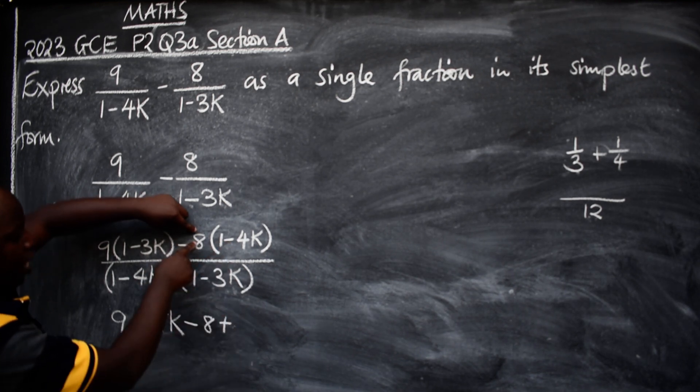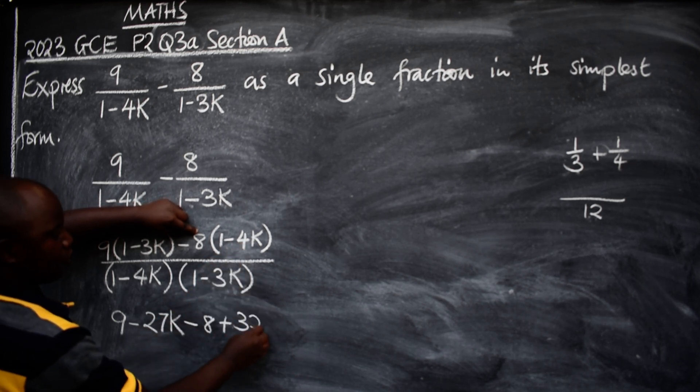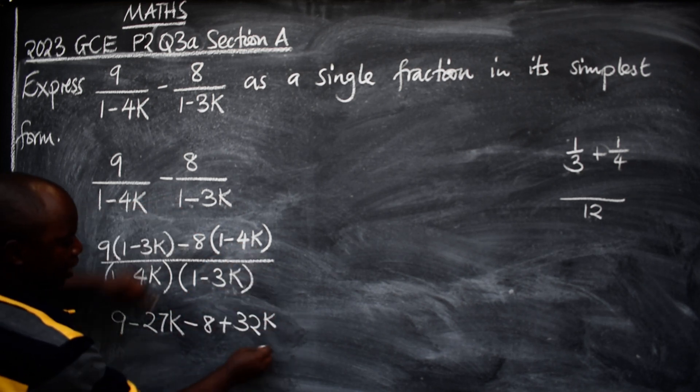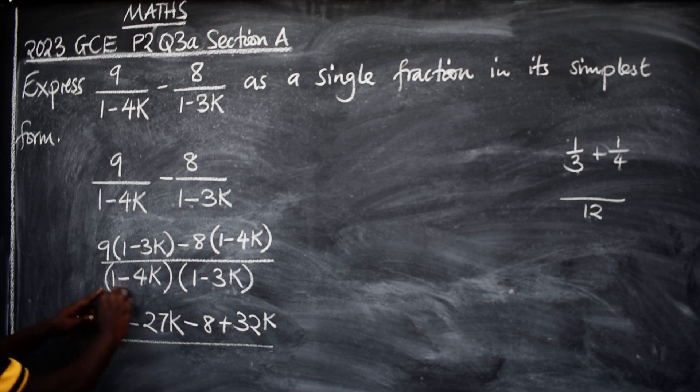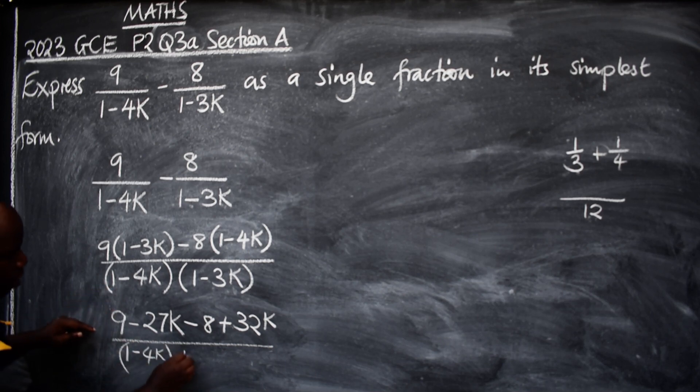Minus 8 times 1 will give us 8. This negative 1 negative will give us a plus. 8 times 4 will give us 32, there's a k like that. Everything, write the denominator the way it is, which is 1 minus 4k, then 1 minus 3k like that.